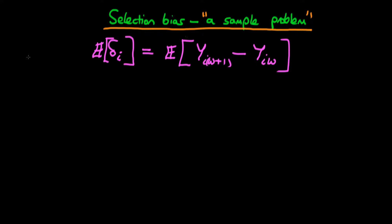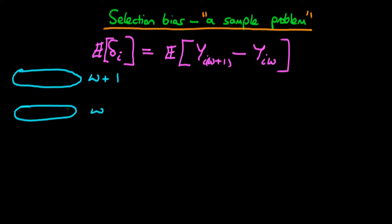The problem is that, in general, we don't actually get to view this potential level of outcome. What we actually have is those individuals who chose a treatment of W+1, and those who chose W. And if we just look at the difference in means of the outcome variable Y between these two groups, we know this is not necessarily going to represent the average causal effect. The difference in means doesn't represent the average causal effect — essentially, what we're doing is comparing apples with oranges.